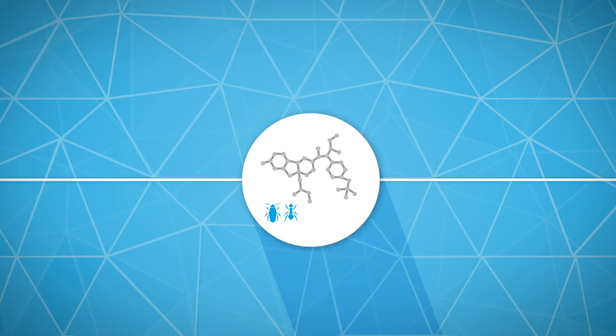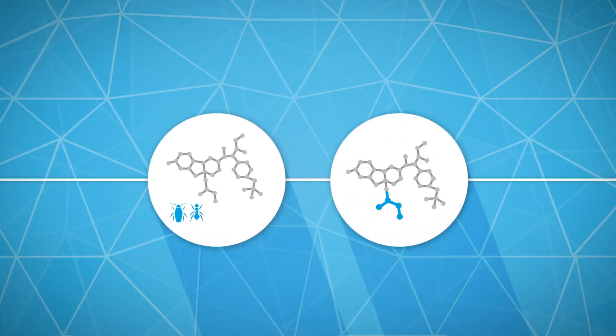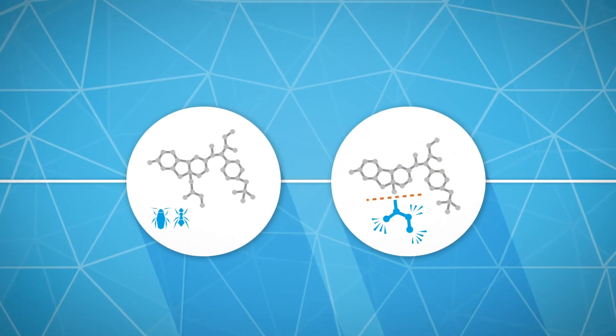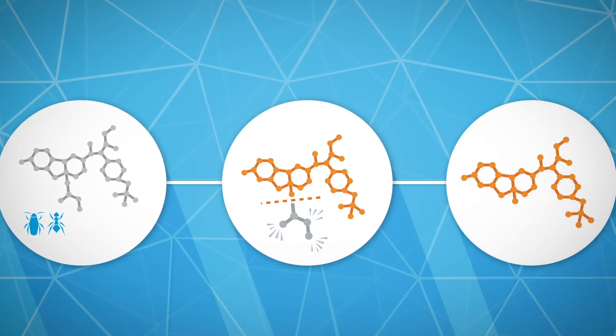The insect's enzymes in the gut and the fat bodies then modify indoxacarb. The resulting molecule is the insecticidal active form.